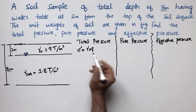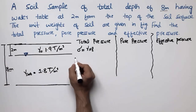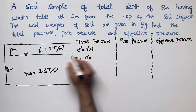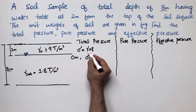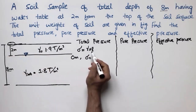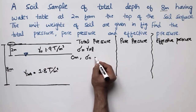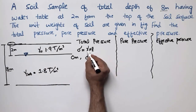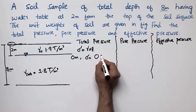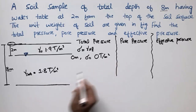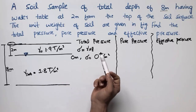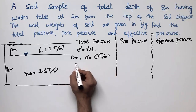Starting from the top of the soil surface where depth Z equals zero, sigma equals gamma multiplied by zero, which gives us zero ton per square meter. The stress at the top of the surface is zero because the height is zero.